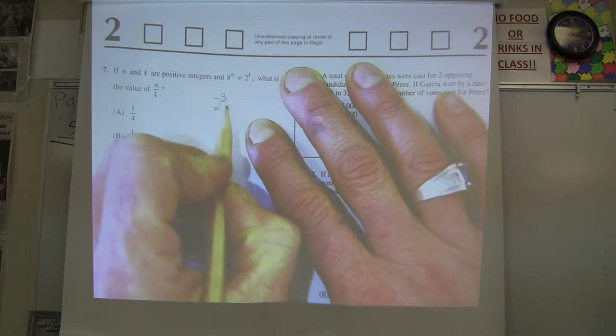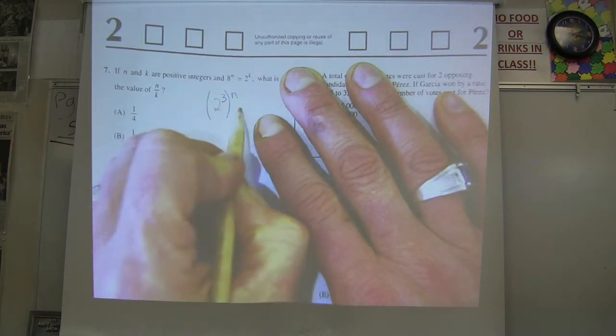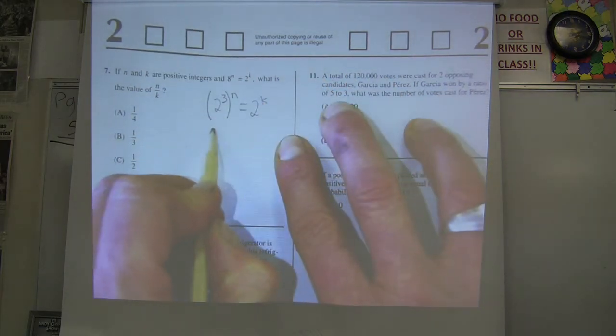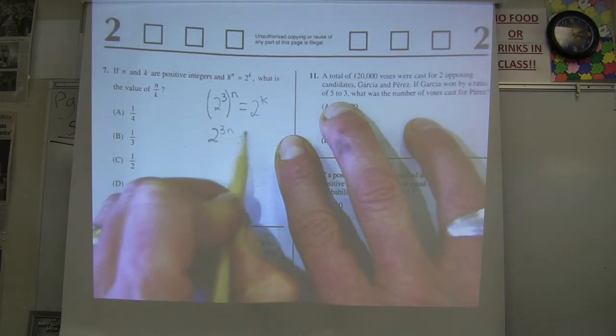So I'm going to change 8 to 2 to the third and then that's being raised to the n power. That now equals 2 to the k. And when you have powers raised to powers, you multiply these powers. So I get 2 to the 3n power equals 2 to the k.